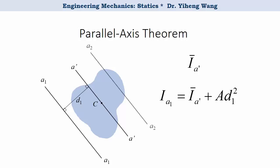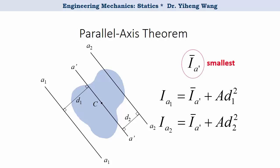Or if there is another axis also parallel to A', say axis A2, with a distance D2 from A', then the moment of inertia about A2 can also be calculated by the parallel axis theorem as I_A' bar plus area A times D2 squared. Therefore using the parallel axis theorem, you can quickly calculate the moment of inertia about any parallel axis. As you can see from these two equations, I_A' bar — the moment of inertia about the centroidal axis — is always the smallest among any parallel axis, which tells you that if this area rotates about its centroidal axis, it will provide minimum resistance.